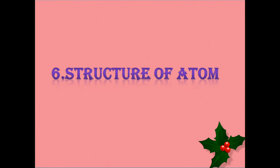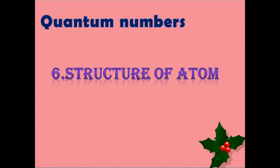The sixth chapter is Structure of Atom. The most important topic is quantum numbers. Quantum numbers are very important, especially if you are planning for intermediate boards. Quantum numbers are very important in chemistry, so don't leave quantum numbers — prepare them perfectly.